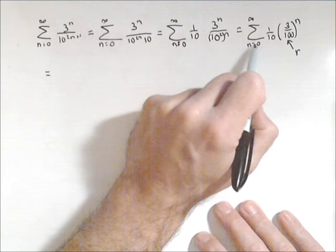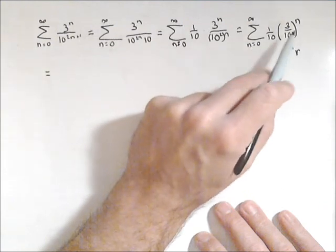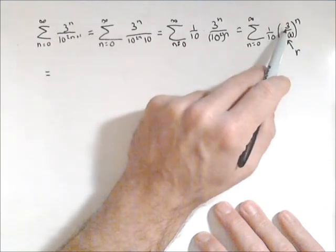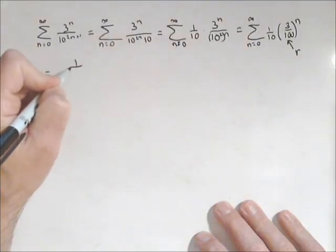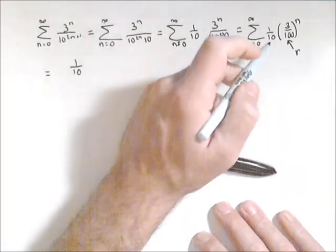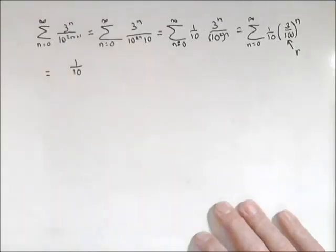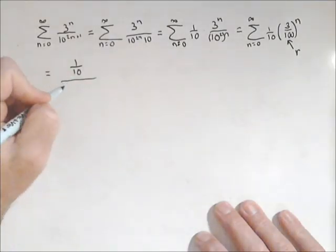We have to calculate the first term. The first term happens when n is 0. Plugging 0 in I get 3 one hundredths to the 0, which is 1 times 1 tenth, divided by 1 minus the common ratio which we identified as 3 over 100.